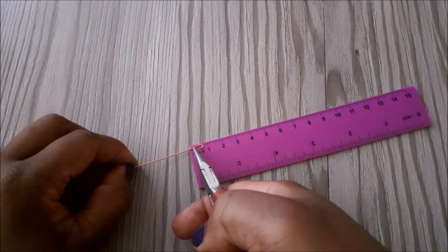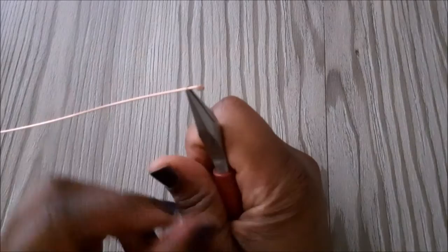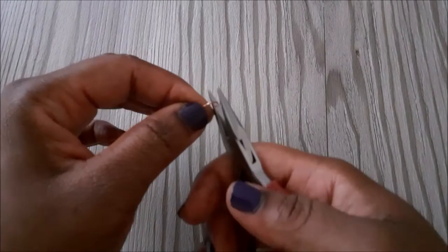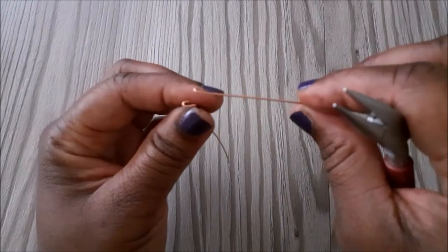We're going to place the chain nose pliers at the 0.7 centimeter mark with the U-shape facing down, and then we're going to use our thumb to bend it, creating like a 90 degree angle.